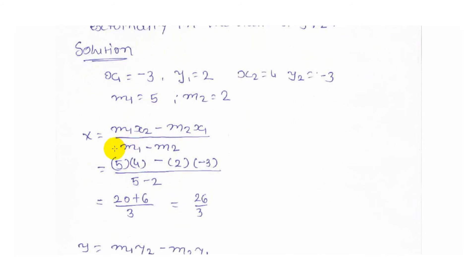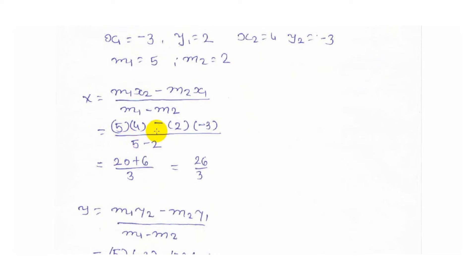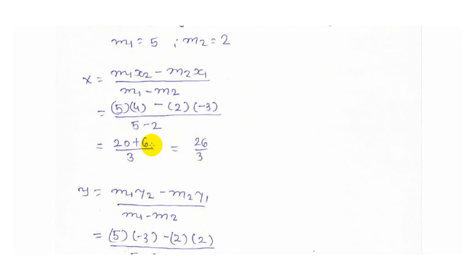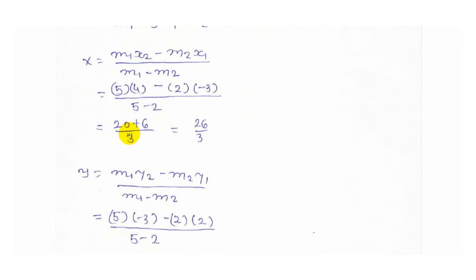For the formula to find the coordinate, x equals m1·x2 minus m2·x1 upon m1 minus m2. Now put the value of m1, x2, m2, x1. As a result we got 20 plus 6 upon 3.